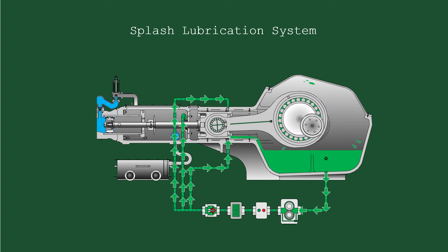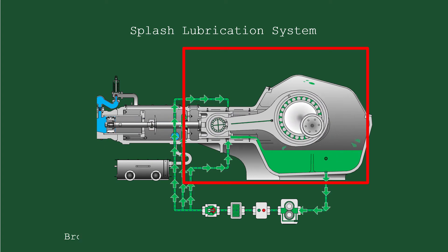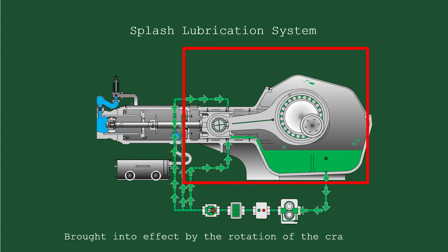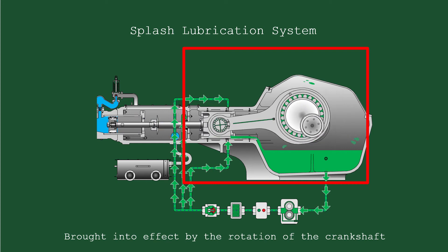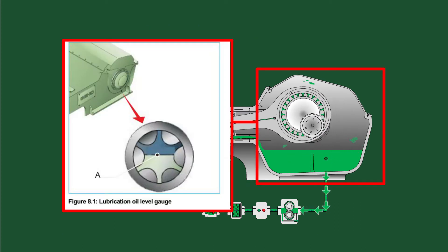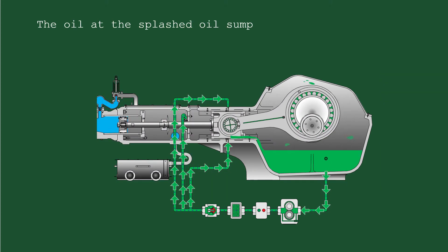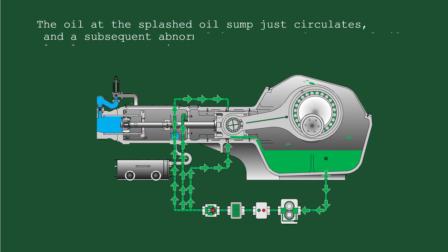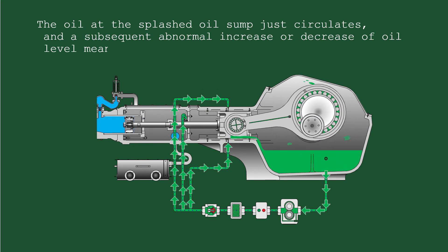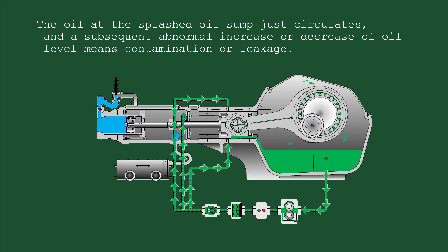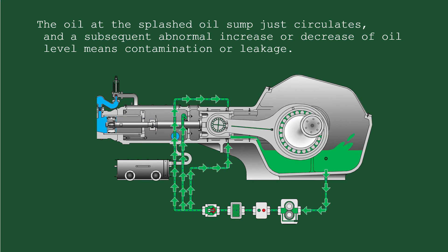The Splash Lubrication System used on the Crankshaft Bearings is brought into effect by the rotation of the Crankshaft in the Oil Sump. This causes the oil level fluctuation observed in the level gauge. The oil at the Splashed Oil Sump just circulates, and a subsequent abnormal increase or decrease of oil level means contamination or leakage and should be reported immediately.